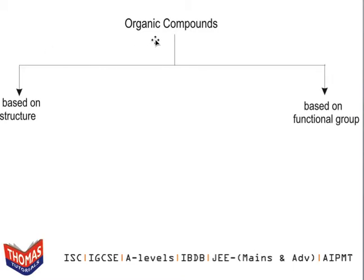Organic compounds, as you can see, are classified in two ways: classification based on their structure and classification based on their functional group. We will discuss classification based on functional group in another video tutorial, but for now we are going to talk about classification based on structure.